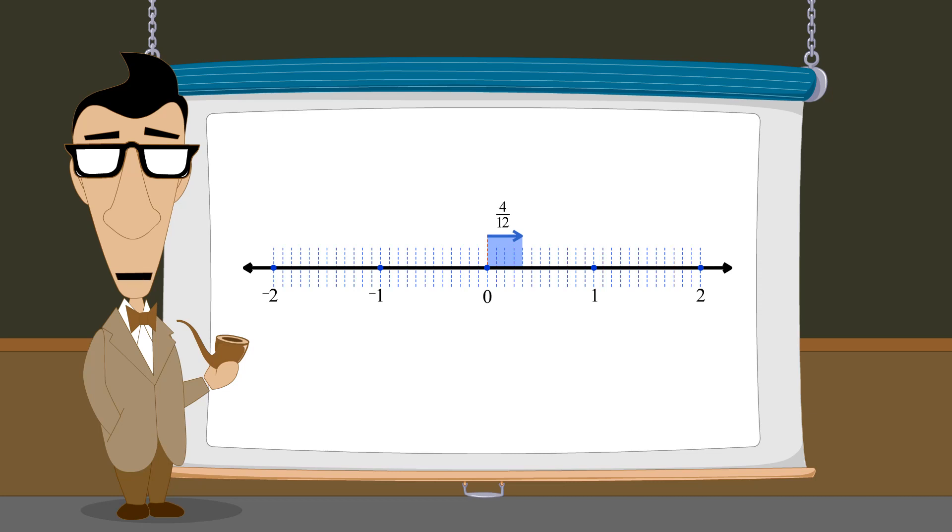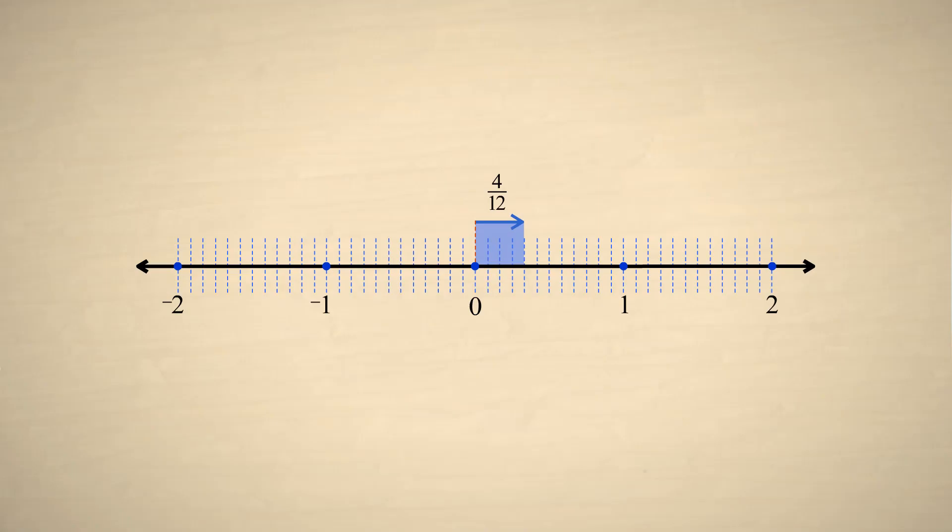Of course, doing so will create an equivalent fraction with a larger numerator and denominator. But it is also possible to do this process in reverse by dividing the numerator and denominator by the same number.